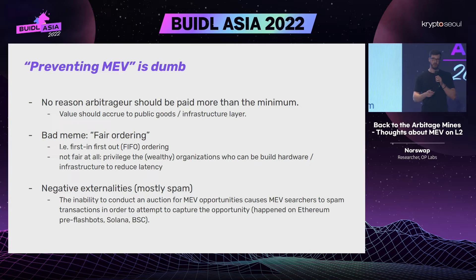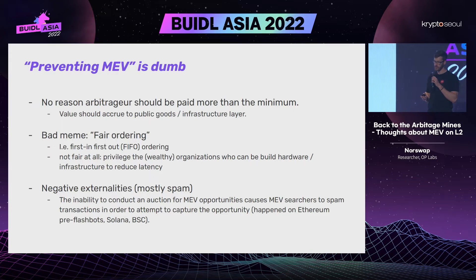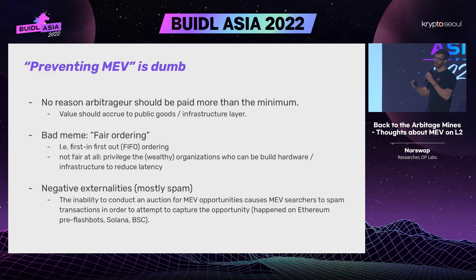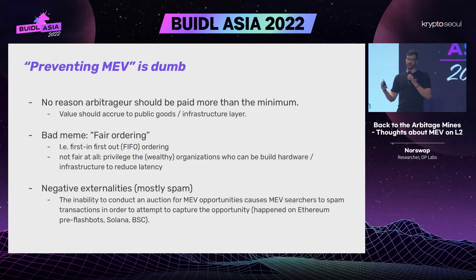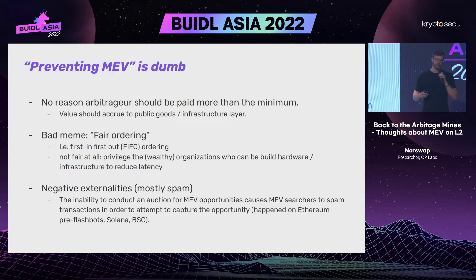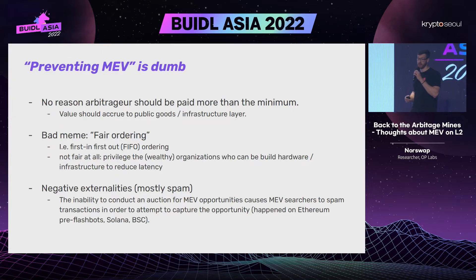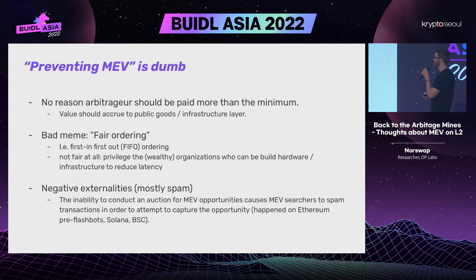The goal is to help grow the ecosystem, increase the value proposition of Optimism, and fund public goods — things that benefit everybody but that nobody is individually incentivized to fund. Some people try 'fair ordering,' which just means ordering transactions in the order they arrive. But this isn't truly fair because it privileges people with very low latency to the sequencer — we've seen fancy antennas and servers used in traditional stock markets. Not allowing any auction mechanism also creates negative externalities, mostly spam.